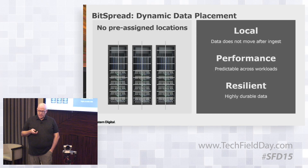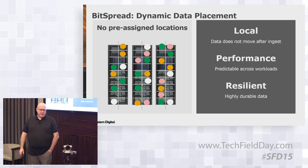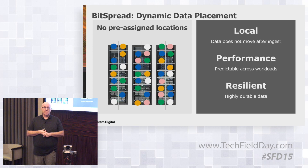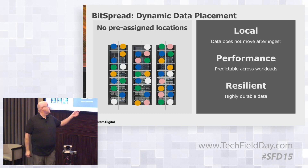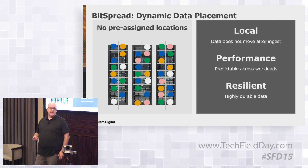Let's get right into BitSpread, which is our erasure coding algorithm. There are no pre-assigned locations. The way BitSpread works, it allocates data based on system capacity, system health, and some predictive analytics based on what it thinks the system is going to be doing over time — based on how fast it has been filling things up. If there's too much data on a given drive, it ensures not too much is added to it in the next 24 hours.